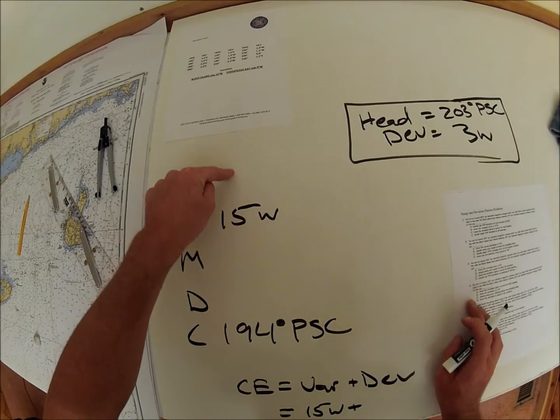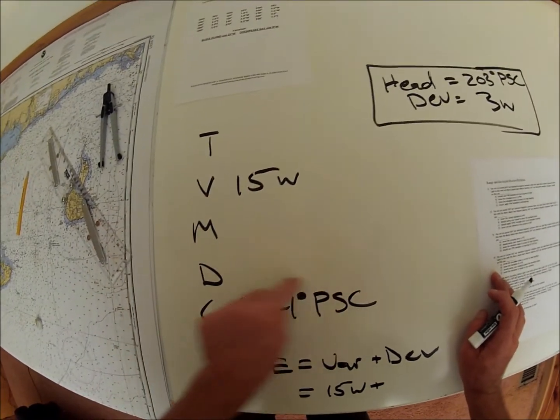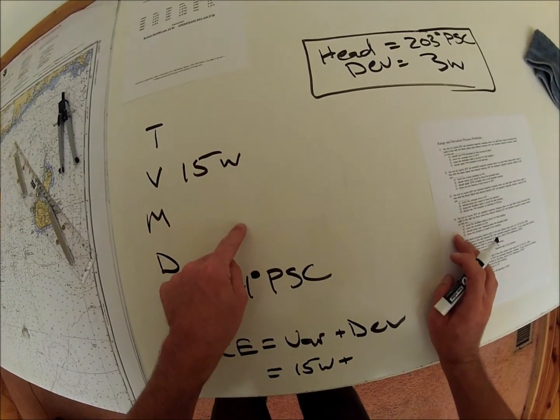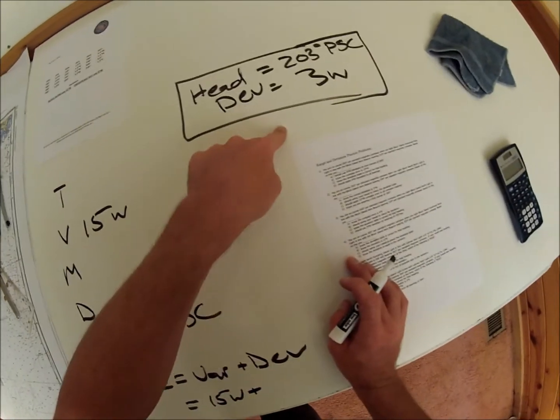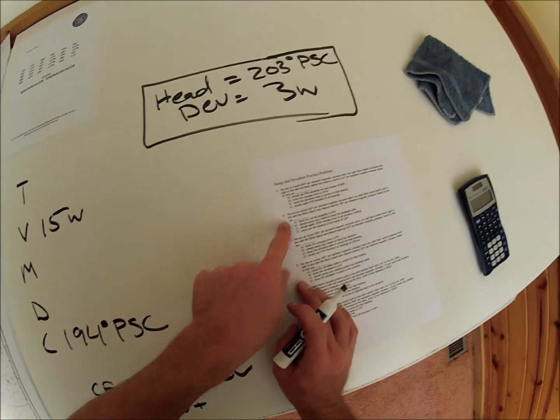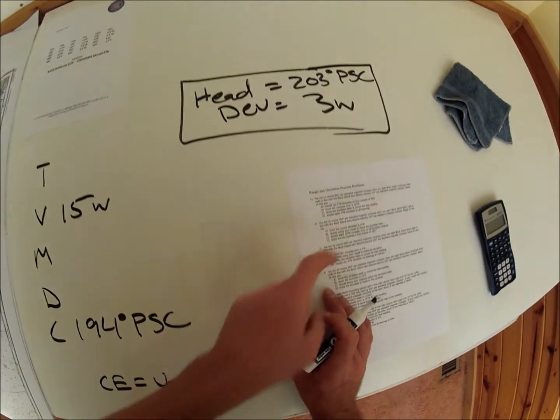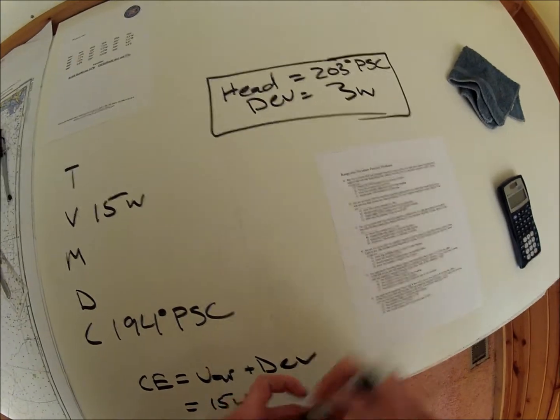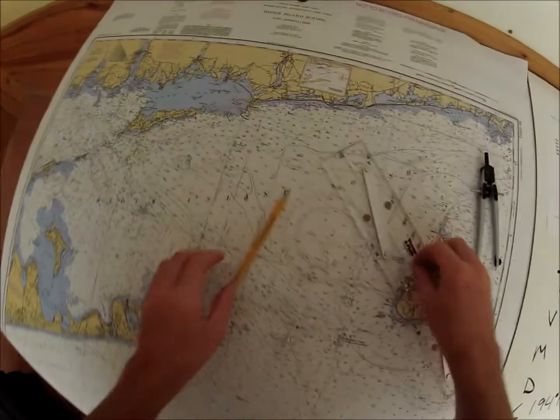So now we need to get a true bearing so we can get magnetic, calculate deviation, we can get our compass error, and we can check the two deviations. Block Island North Light in line with Block Island Arrow Beacon.